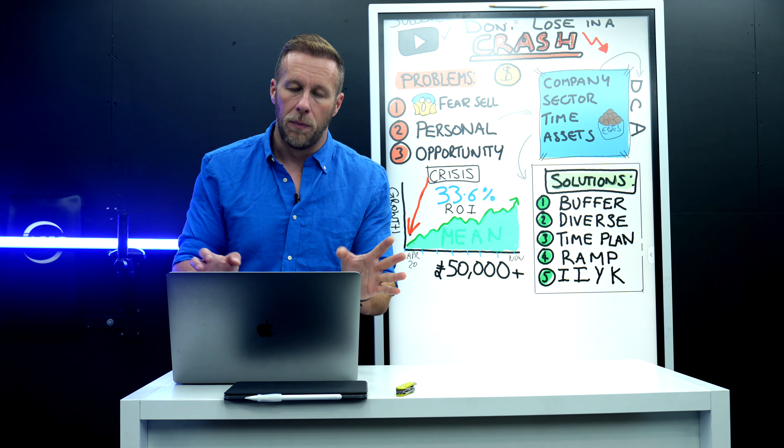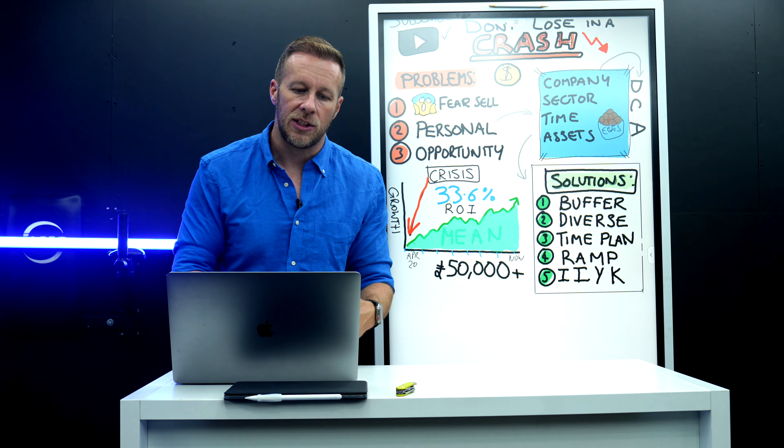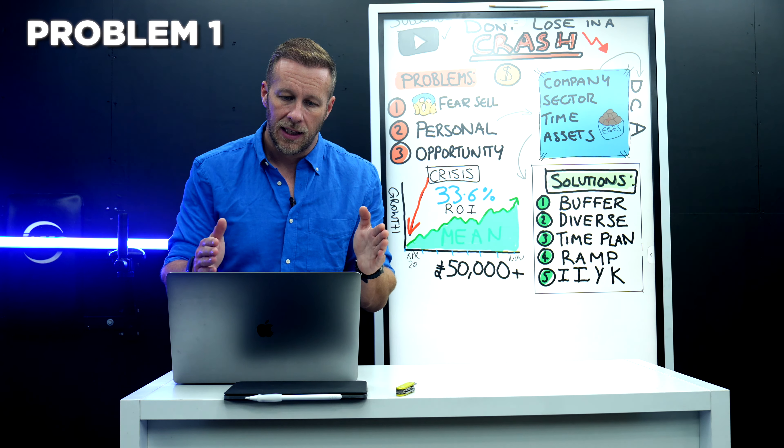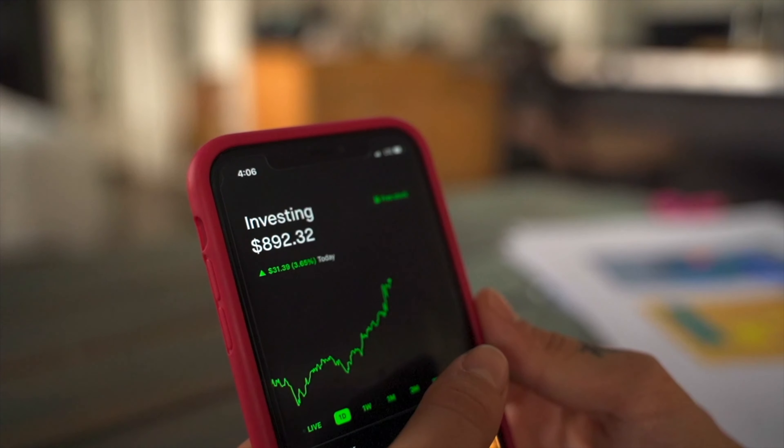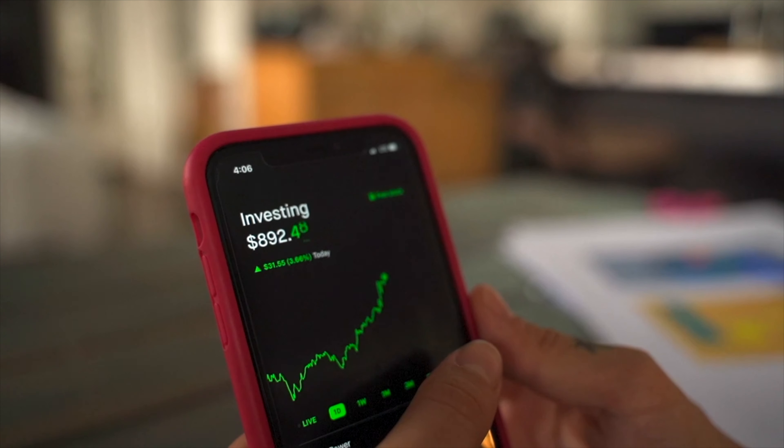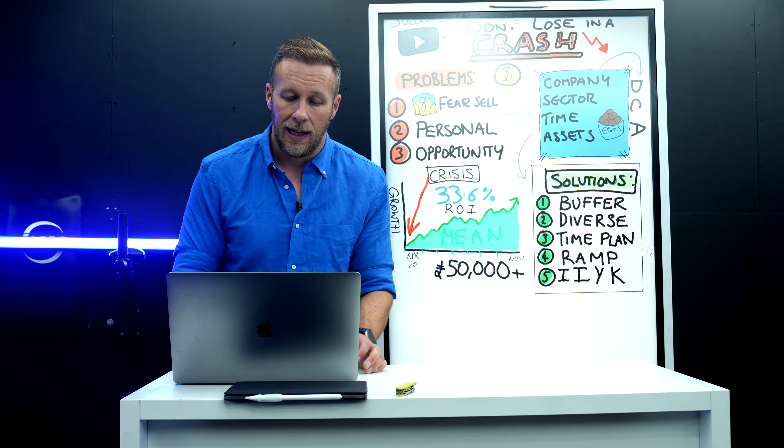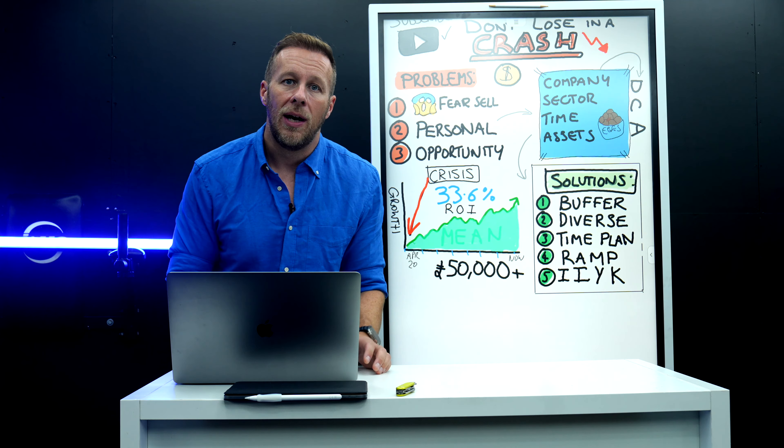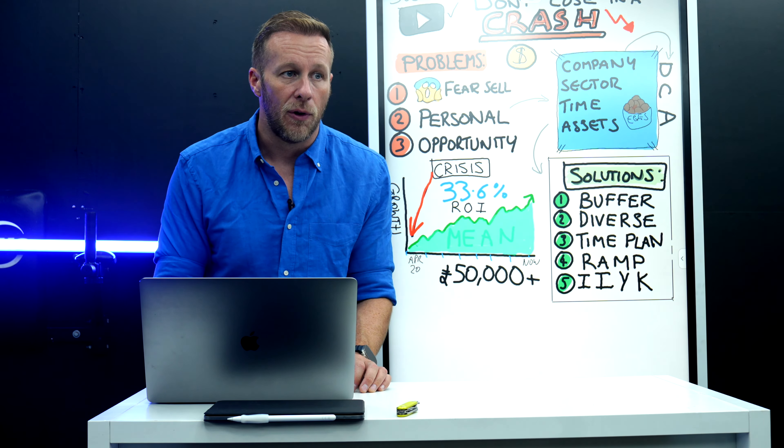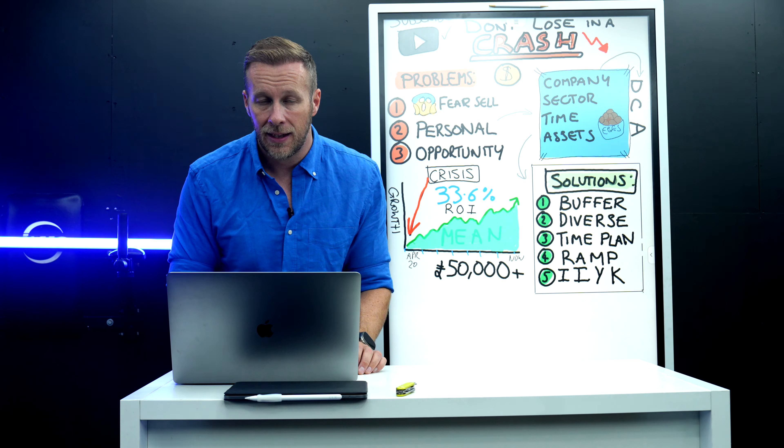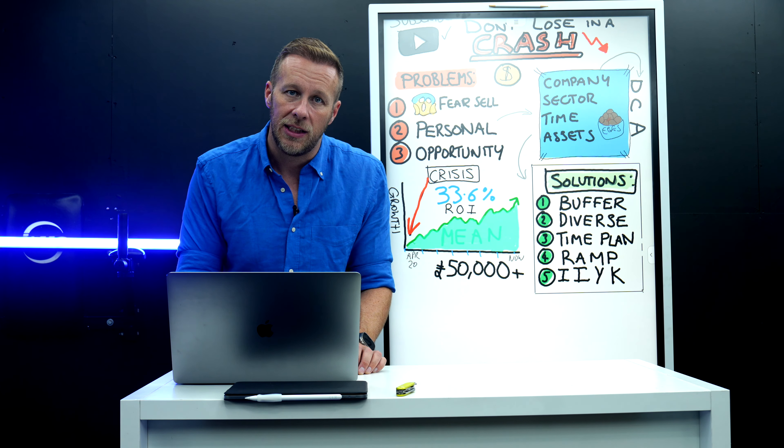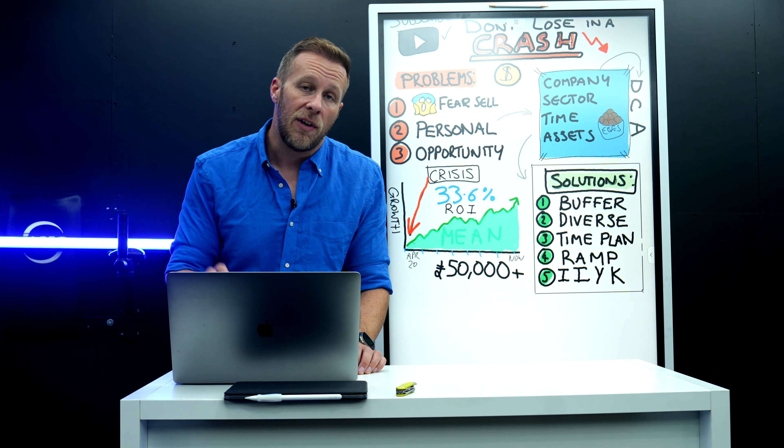Now, there's three common problems that investors make that result in them losing money over time. And these are big problems. The first one is when a market crash happens, many of the investors panic and they sell off their assets at a loss. And this fear-based reaction can literally wipe out years of gains in just a few days, if not hours, or even minutes. 70% to 90% of investors lose money over time when the market crashes, but not because the investments go down in value. It's because of how they react to that.